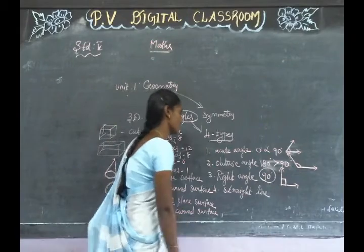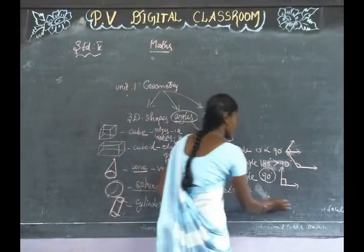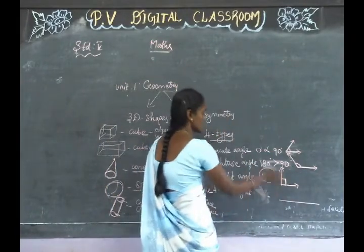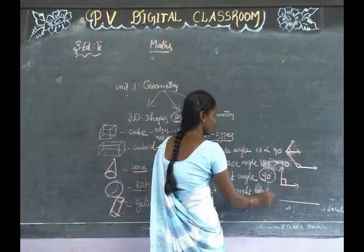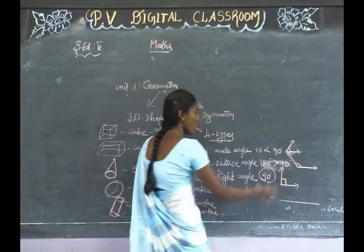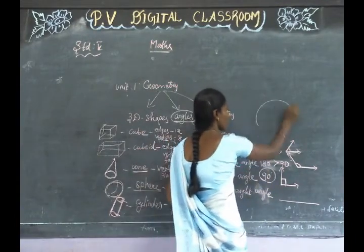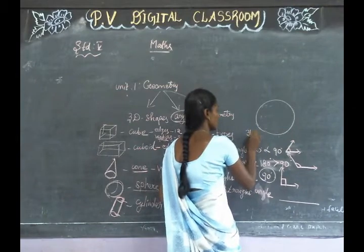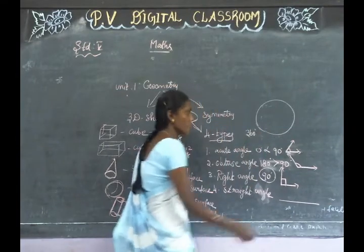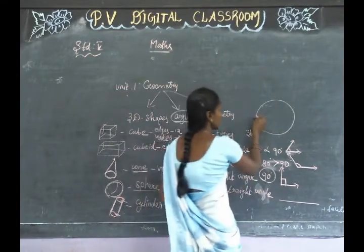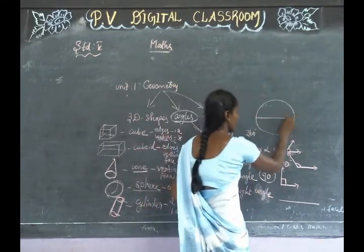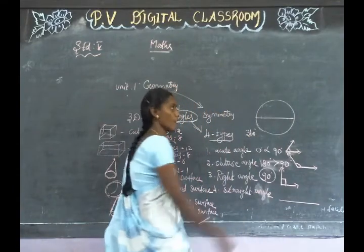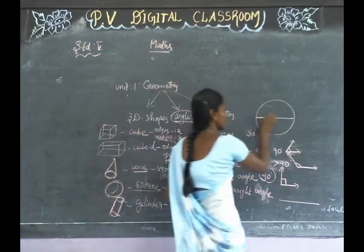Straight line. We draw the lines. How do we draw the angles in this straight line? We have a circle in 360 degrees. 360 degrees is one circle.